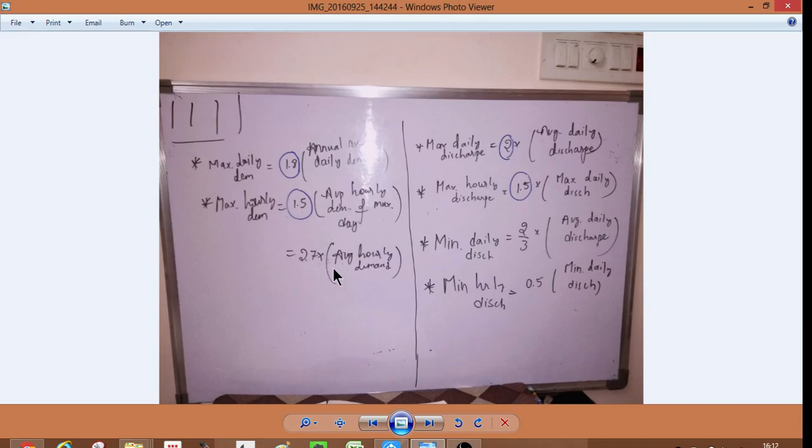From this you get 2.7 into average hourly demand. Both are maximums - maximum daily demand.